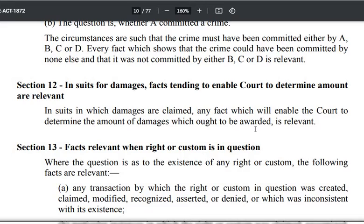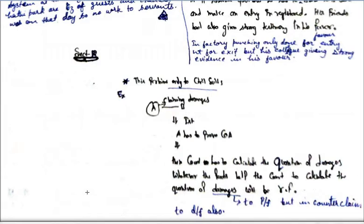This is a little substantive law related. When people study contract or tort, they can understand this. For example, suppose A has filed a suit against B for a breach of contract and A is claiming damages, and the court decided that B has done the breach of contract and therefore damages have to be awarded. This section says whatever fact helps in determining the quantum of damages will be a relevant fact.